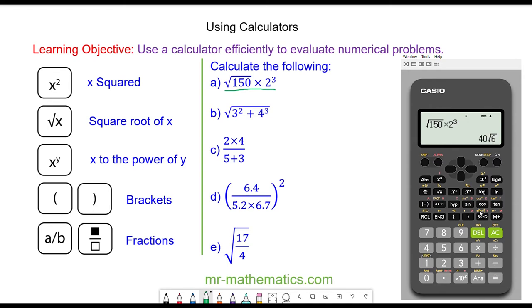We press equals and we have given the answer in a simplified surd form which we can press the SD button to convert it to a decimal and that works out as 97.98 to two decimal places.